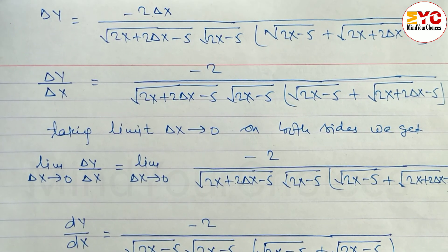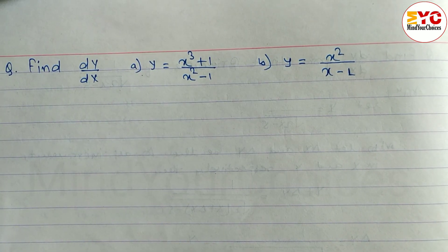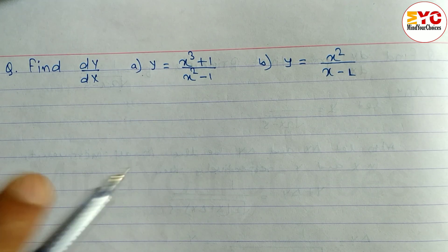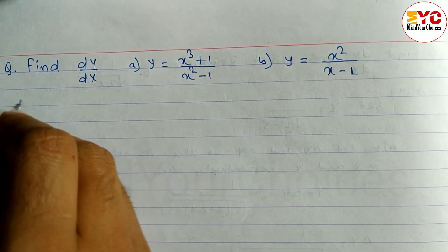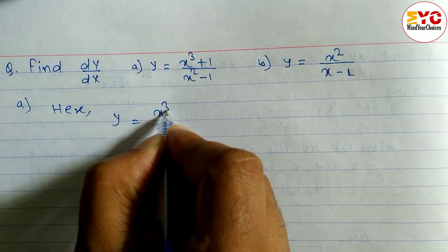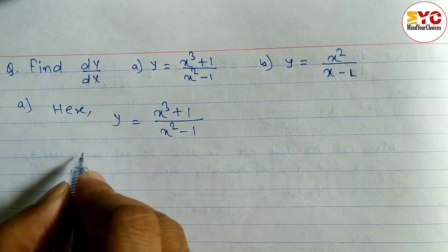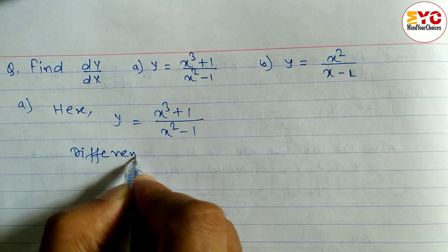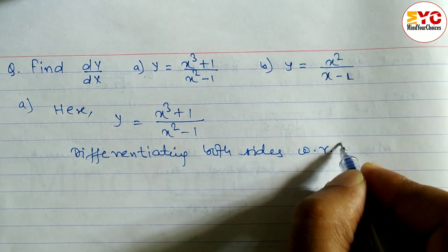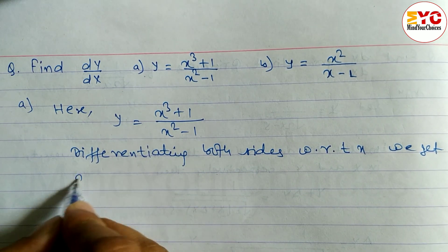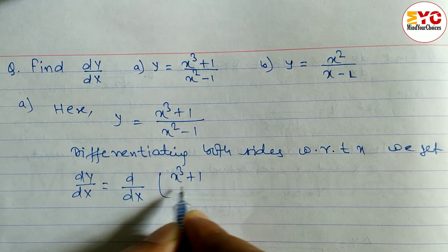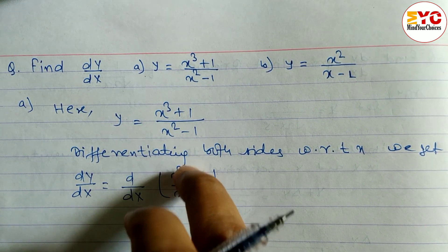Hope you understand how to find dy/dx by using the first principle. Now look at the next question. This question is to be done by using the formula, not by first principle. So we use the quotient rule formula. Let's take a start. Here y equals (x³ + 1) divided by (x² - 1). Differentiating both sides with respect to x, dy/dx equals d/dx of (x³ + 1)/(x² - 1).